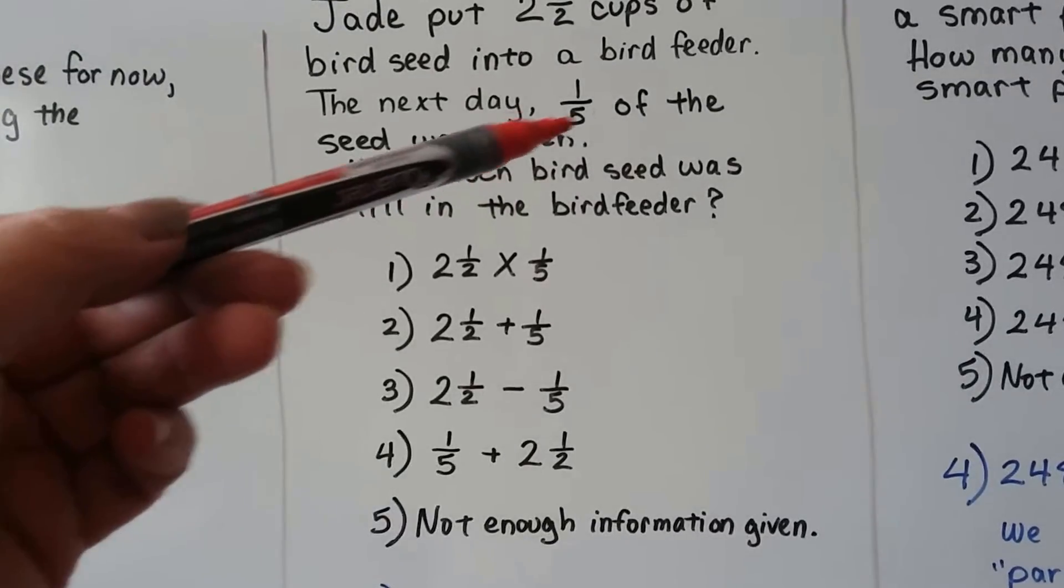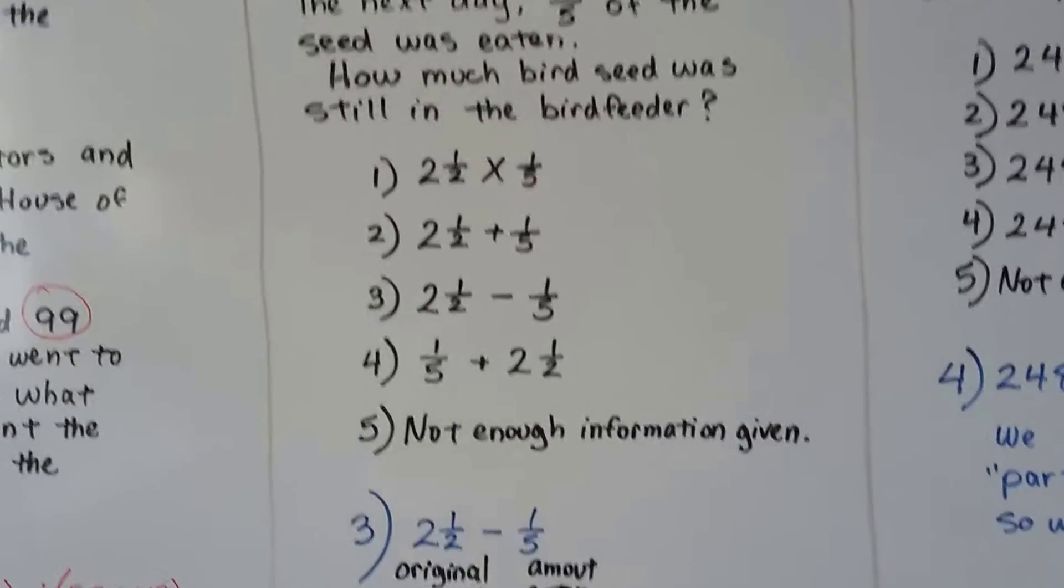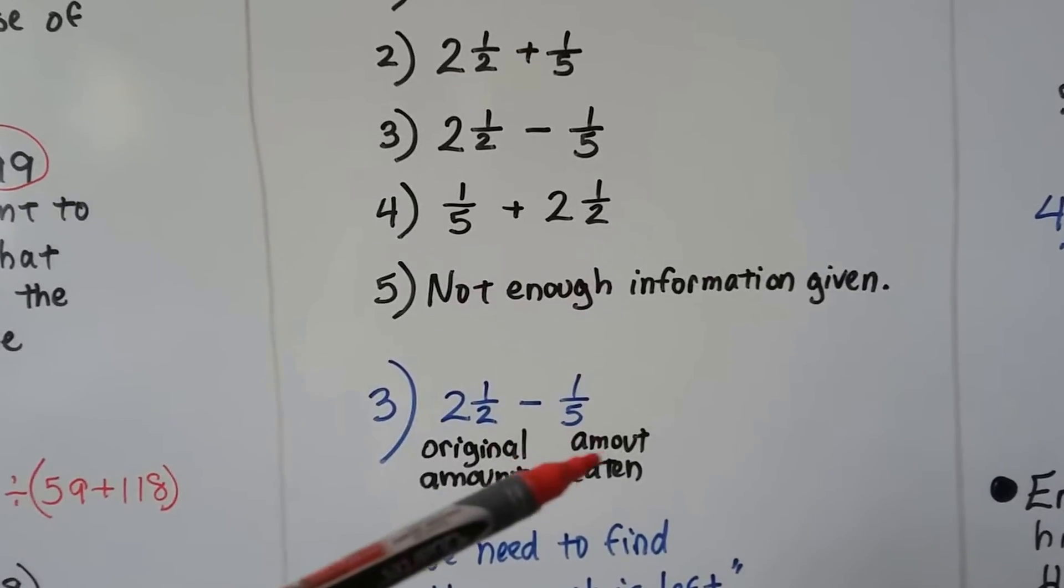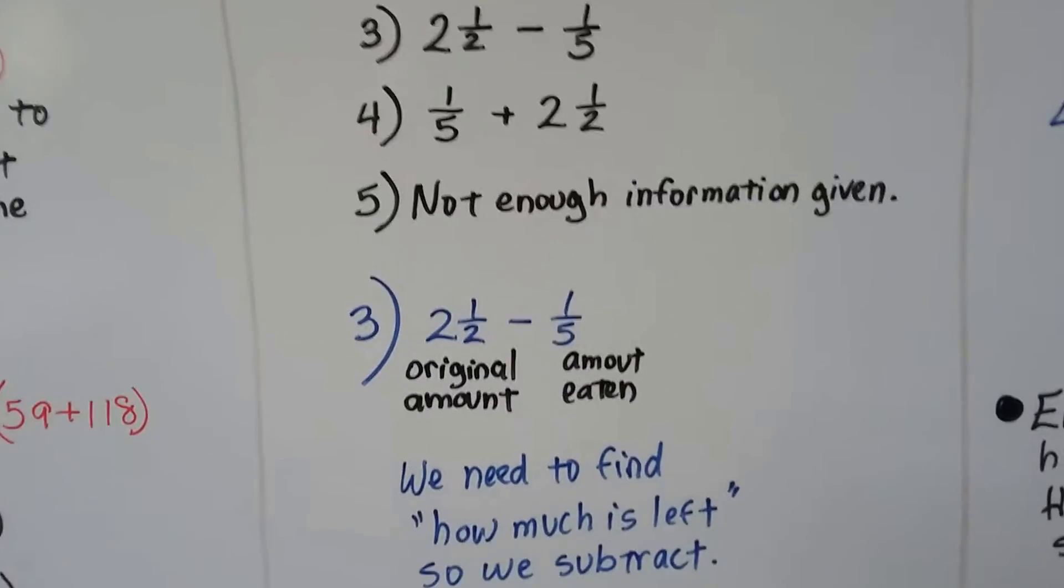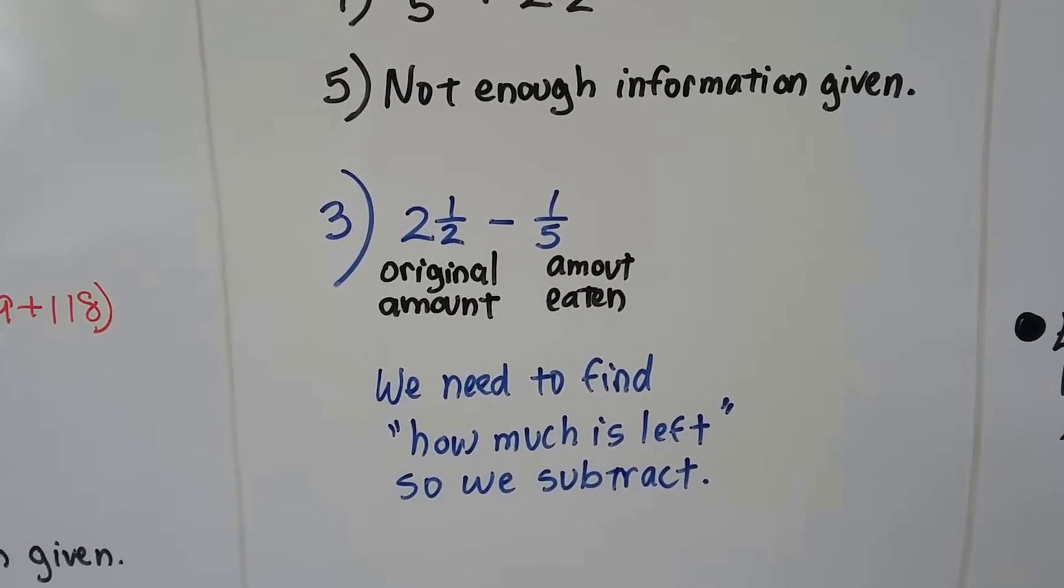Well, if that was eaten, that means we need to take it away. It was gone. It was removed, right? So it would be two and a half, which is the original amount, minus the one fifth that was the amount eaten. And we need to find how much is left. So we subtract. Okay? Let's try another one.